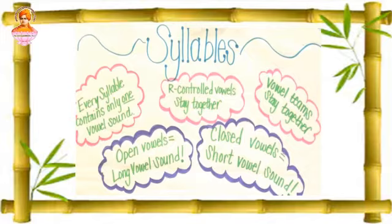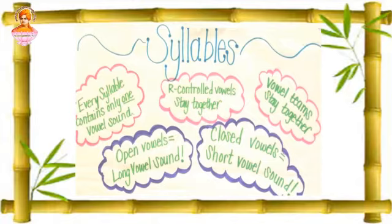For example, in the word together, it ends with R and before R there is a vowel E. So we cannot split it as to-geth-er — that E and R cannot be divided. That is why we say R-controlled vowels stay together. Also, vowel teams stay together. For example, in school, the vowel team is OO — we cannot split that OO while dividing the word into syllables. Additionally, an open vowel equals a long vowel sound, and a closed vowel equals a short vowel sound.